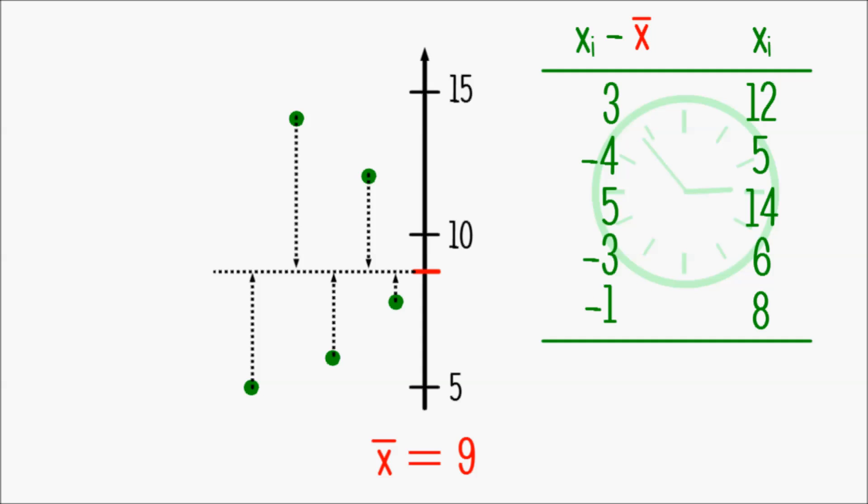However, if we do it the way I'm doing it here, we would always end up with zero. That would always be the case, irrespective of the dataset, because all positive and all negative deviations will always be cancelling each other out, which is simply a consequence of the definition of the arithmetic mean.